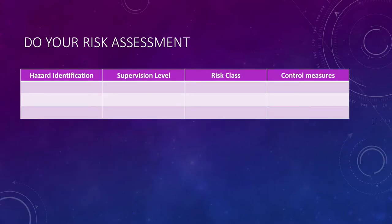Identify the hazards, what kind of supervision level you're going to use, what class of risk are those hazards that you've identified, and what control measures will you put in place to try and reduce or control the hazard.